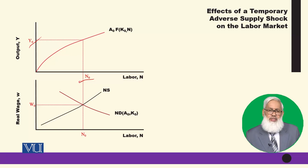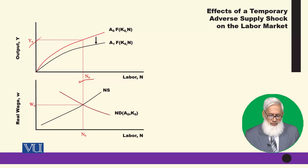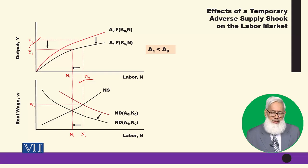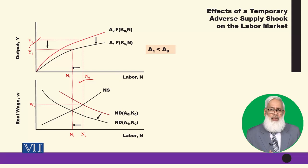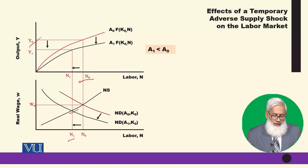If there is now an adverse supply shock, this causes a downward shift in the production function. As a result, the labor demand curve also shifts downward. Since we assume this supply shock is of a temporary nature — if it were permanent, wealth and future expectations would affect labor supply — labor supply remains unchanged. The labor demand curve shifts down to a new equilibrium point where the new labor demand and labor supply intersect, giving new employment level N1.